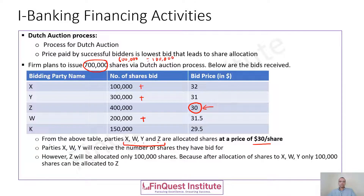To summarize the allocation: parties X, W, and Y will receive the full number of shares they bid for. Party Z will receive only 100,000 shares — although they bid for 400,000, there weren't that many outstanding shares remaining, so only 100,000 are allocated to Z.